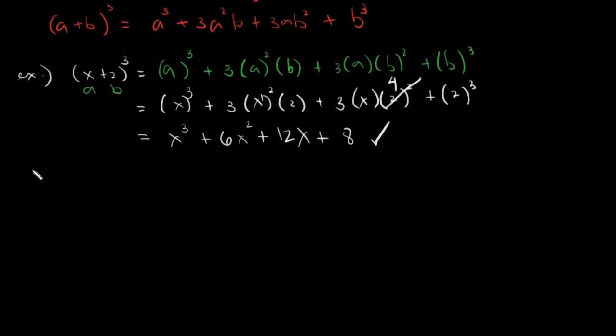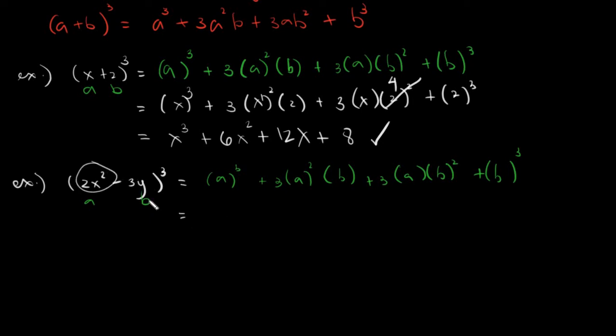I think this one is shorter than our previous discussion. In any case, I think you would have a background on how to substitute. Let's say we have 2X squared minus 3Y cubed. By substitution again, we will have A cubed, this is our A and B. Plus 3A squared times B plus 3AB squared plus B cubed. This would be our structure.